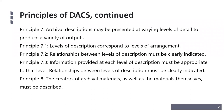Principle 7 states that archival descriptions may be presented at varying levels of detail to produce a variety of outputs. 7.1 states that levels of description correspond to levels of arrangement. 7.2 states that relationships between levels of description must be clearly indicated. 7.3 states that information provided at each level must be appropriate to that level. Finally, Principle 8 states that the creators of archival materials as well as the materials themselves must be described — provenance is key, and the creator or creators of a collection are just as important to the description as the materials themselves.